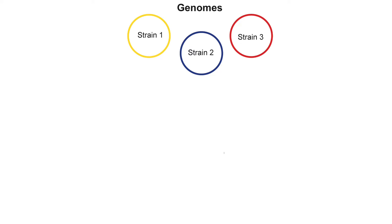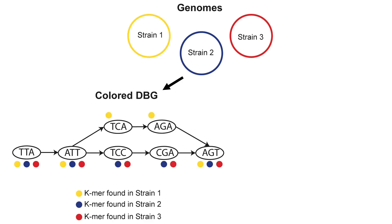Among these advances, the development of the colored de Bruijn graph has played a central role in many sequence analysis methods. The key concept of colored de Bruijn graphs is that each k-mer in the graph is associated with annotation information, referred to as colors, that track which sequences the k-mers are originally derived from. This ability to represent sequences from multiple sources in one de Bruijn graph has been essential for the development of new approaches for variant identification, sample comparison, and experiment discovery.